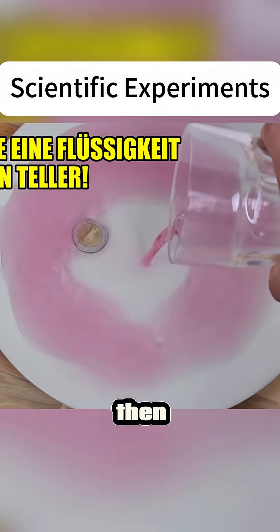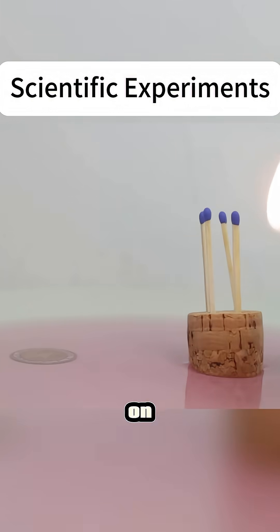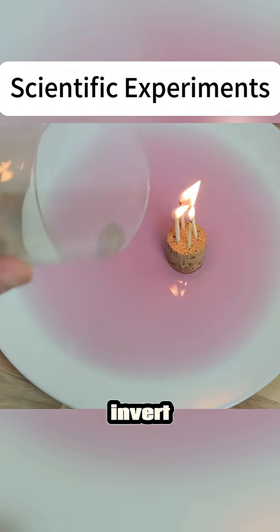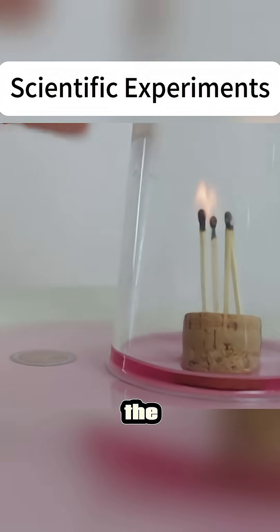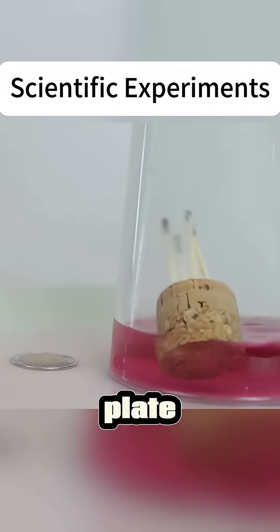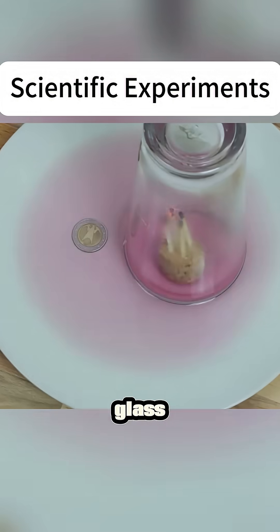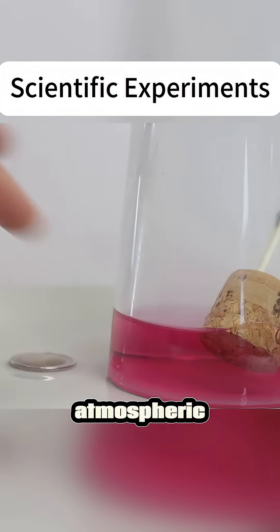Pour liquid onto a plate, then place a cork with a lit match on the plate. Light the match and invert a clear glass cup over the lit match. As the oxygen inside the glass is used up, the liquid on the plate is magically sucked into the glass. This is the power of atmospheric pressure.